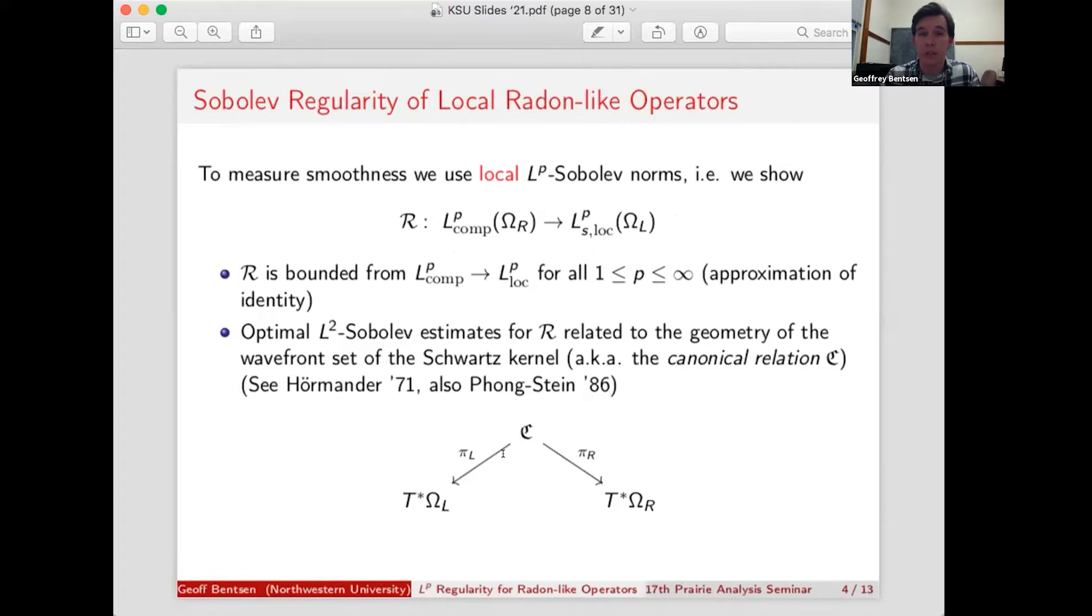The other thing that we know is that there's a wealth of history on L2-Sobolev regularity for these operators, because local radon-like operators are examples of Fourier integral operators. And so this whole theory, going back to Hormander and even before that, relating L2-Sobolev regularity to the geometry of the wavefront set of the Schwartz kernel of R. In other words, the canonical relation associated to R. So if you don't know what that is, that's okay. We don't need to go too much into it for this talk.